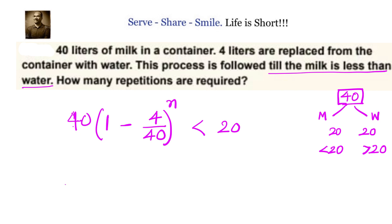Here we have the quantity of milk left after n repetitions. We have originally 40 liters of milk. Every time we are replacing 4 liters of milk with water. After n times, we will be having this quantity of milk less than 20 liters.